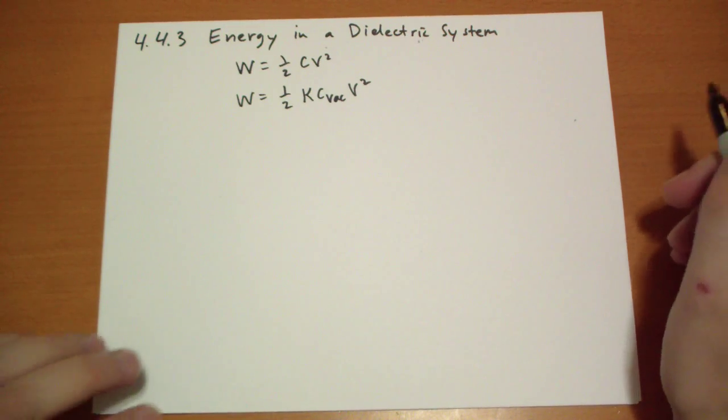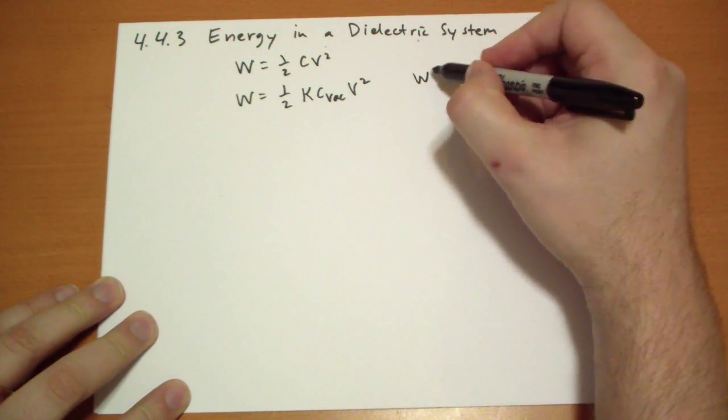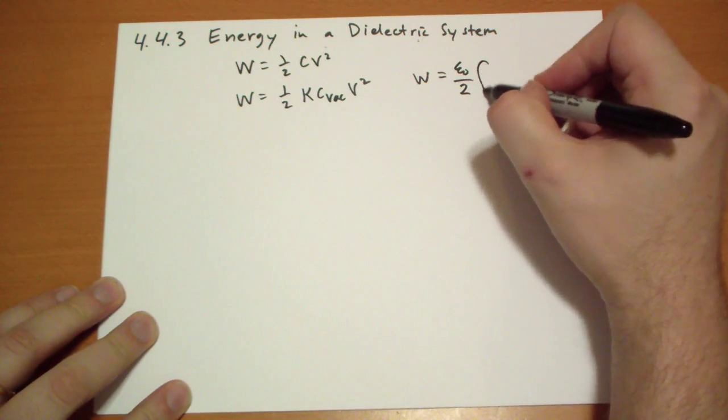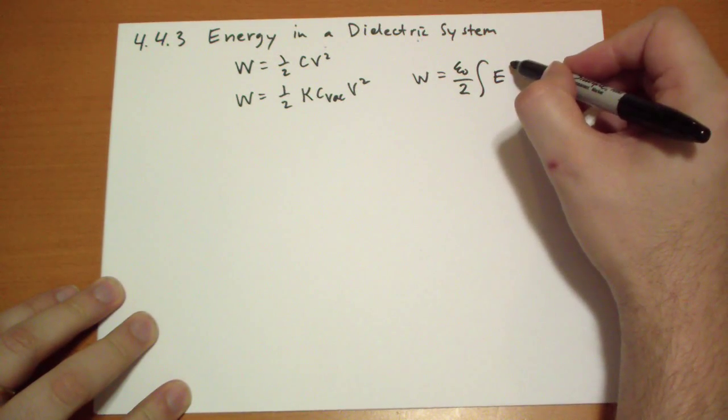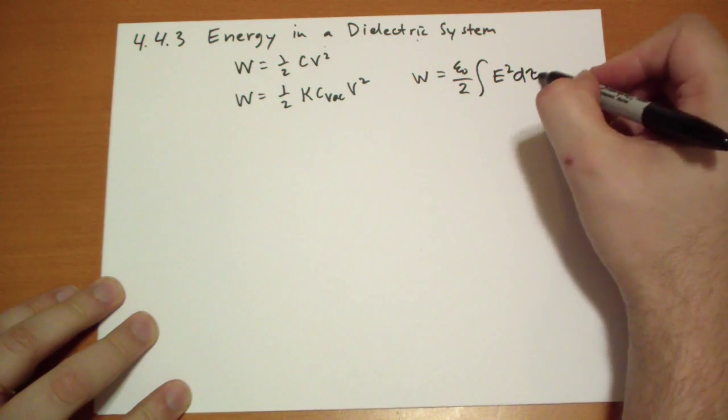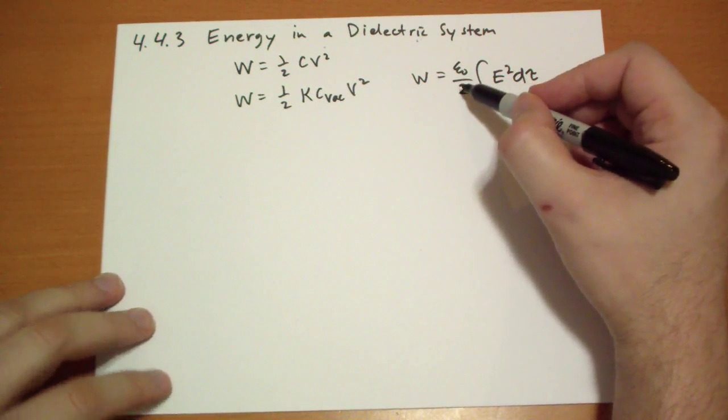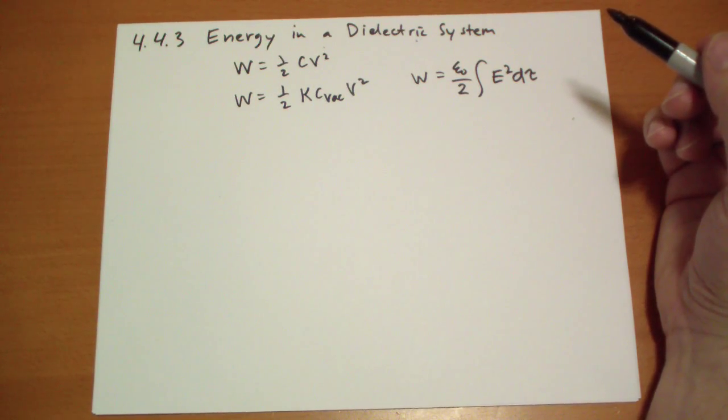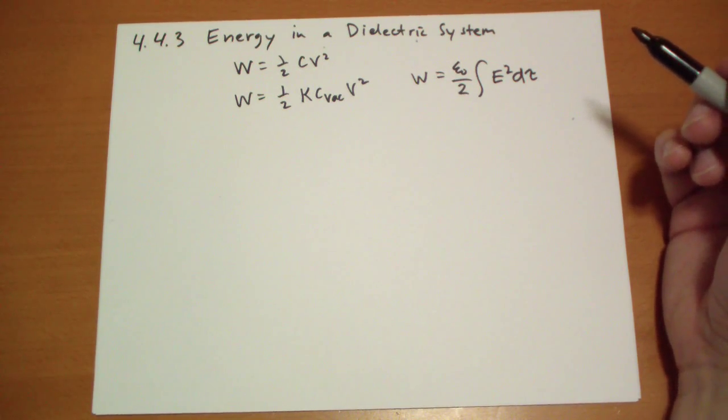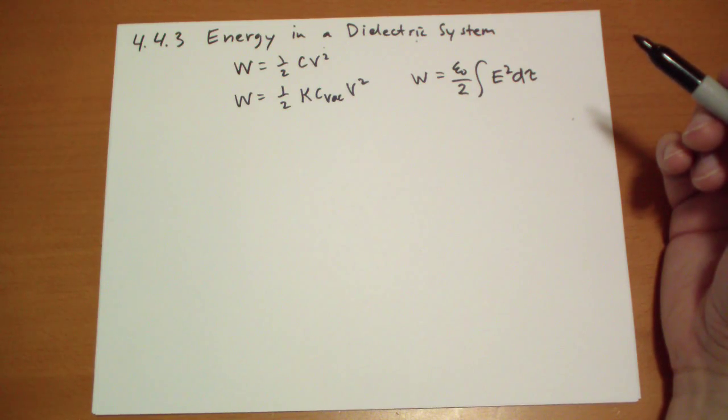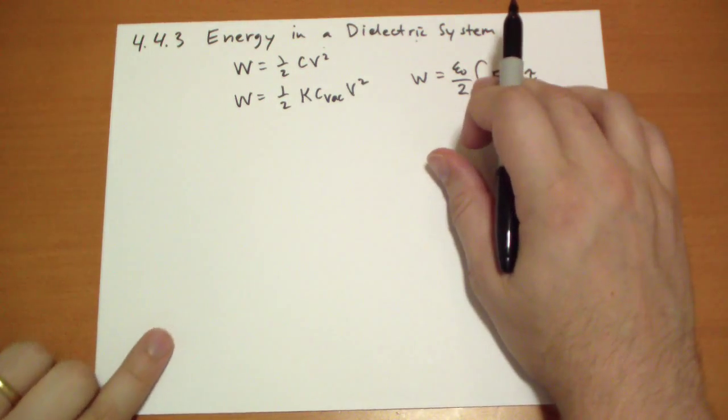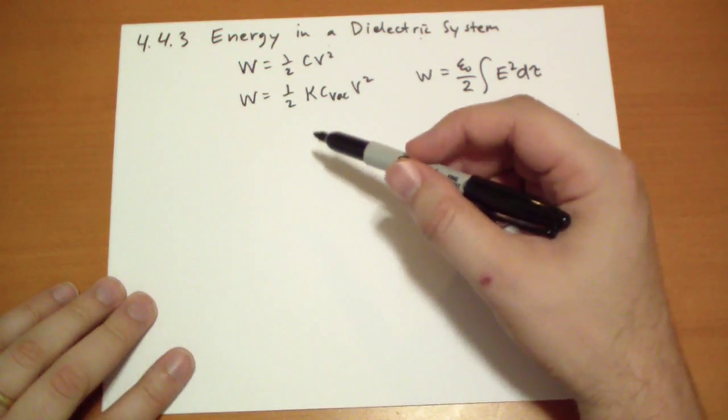Back in chapter 2, we had this equation to calculate the amount of work it takes to assemble a system of charges. So we take the electric field everywhere times the volume component and multiply, add them all together, and we take the epsilon 0 over 2 of that, and that's total work to put all the charges together one at a time.